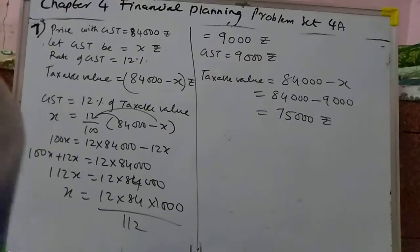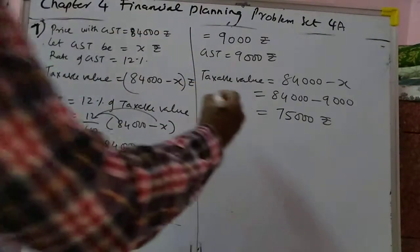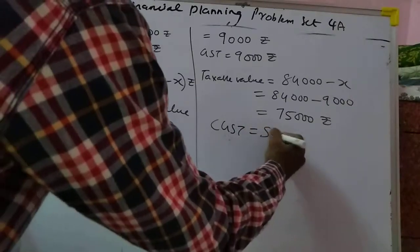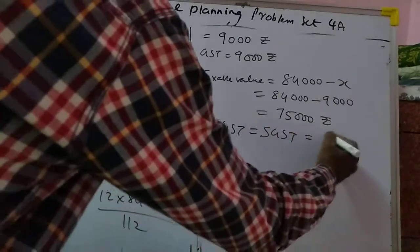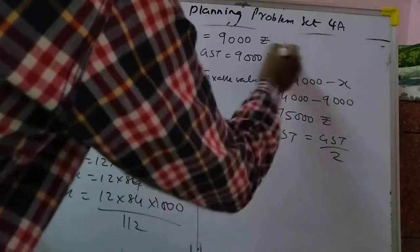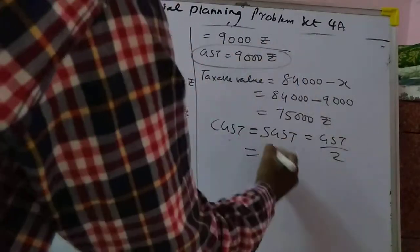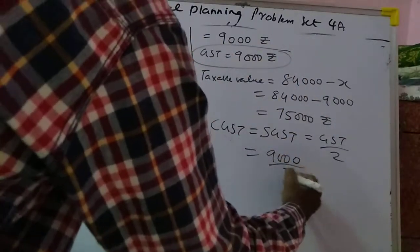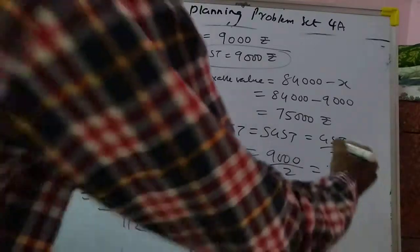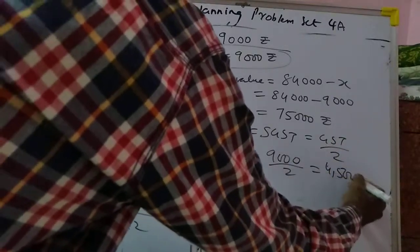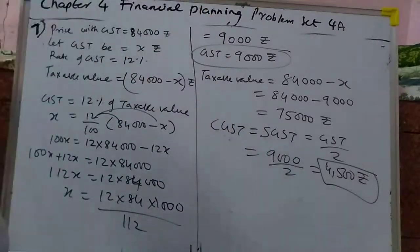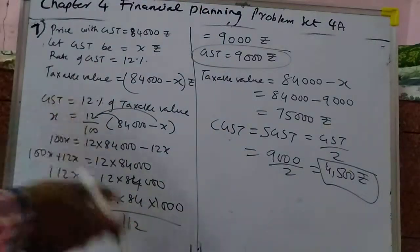Now find CGST and SGST: each is equal to GST divided by 2, so 9,000 divided by 2 equals 4,500 rupees each. I hope you got this. Next we will do the 8th problem.